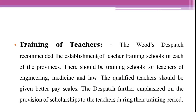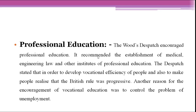Wood's Dispatch recommended the improvement of vocational and professional education. They recommended the establishment of medical, engineering, law, and other institutes of professional education. The dispatch stated that in order to develop vocational efficiency and to make people realize that British rule was progressive, encouragement of vocational education was also needed to control the problem of unemployment.